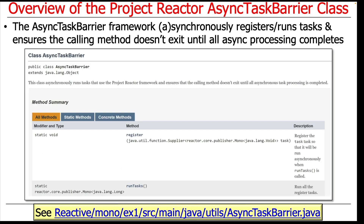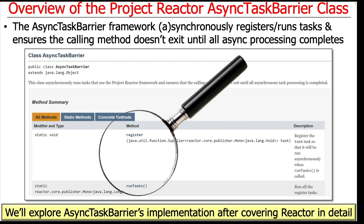The Async Task Barrier framework allows tasks to be registered with it and run, and it just ensures that the main thread doesn't exit until all the asynchronous processing is finished. We're not going to go through the implementation of the methods right away — we're going to wait until we get done with a deeper discussion of how Fluxes and Monos work, because we get into topics that are really hard to understand without knowing the details. But we will cover those when the time is right. Just be aware that I use this for all the examples because I want to let them run to completion without the program exiting before the computations are finished.